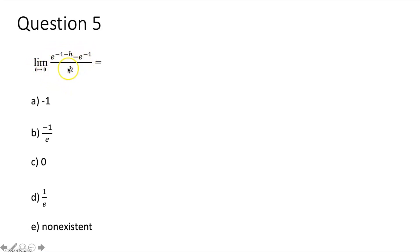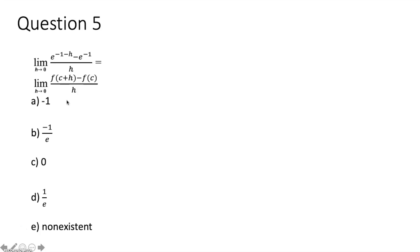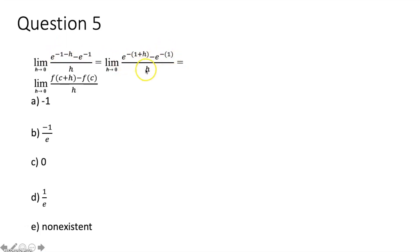Question five says evaluate the limit as h approaches zero of e to the negative 1 minus h minus e to the negative 1, all over h. This is testing your knowledge of the definition of the derivative at a particular x value c. The definition uses the limit as h approaches zero of f of c plus h minus f of c all over h. Our function looks like e to the negative something. Notice this is negative 1 minus h, not c plus h, so we factor out a negative 1 to get e to the negative parentheses 1 plus h minus e to the negative parentheses 1, all over h.